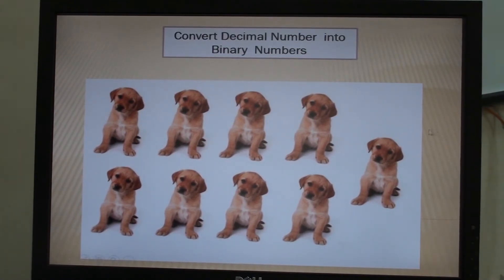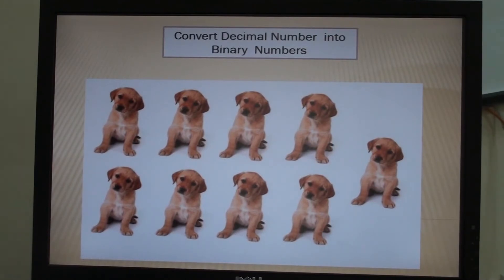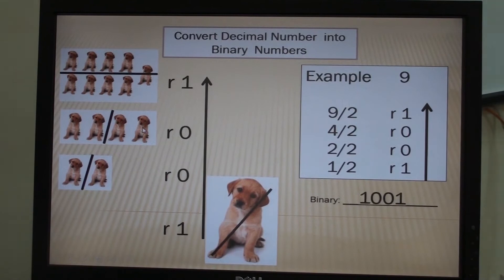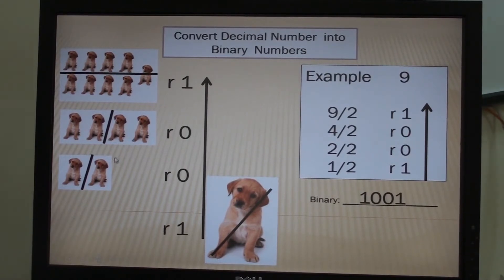Another example. How many puppies do we have now? We have 2, 4, 6, 8, 9 — so there are 9 puppies. The number 9 can be converted into a binary number. 9 divided by 2 is equivalent to 4, but there is a remainder 1. So write remainder 1. Then 4 divided by 2 is 2, but there is no remainder.